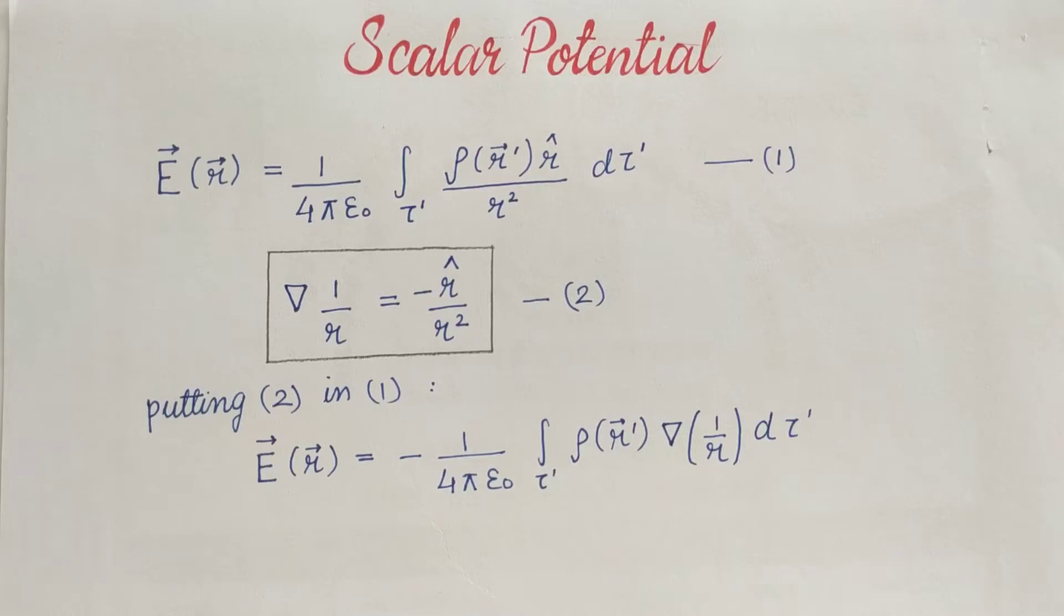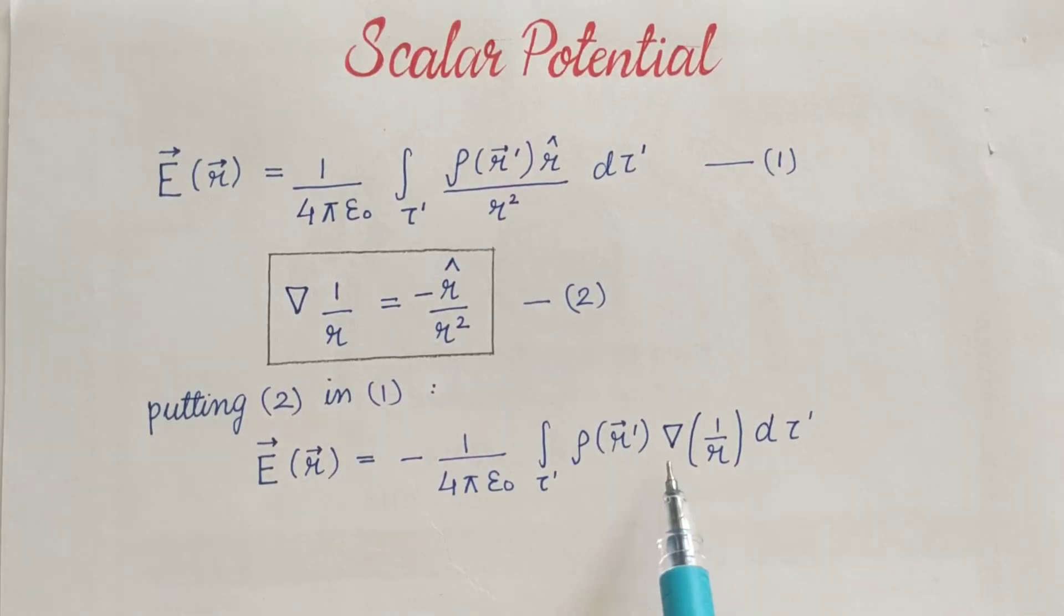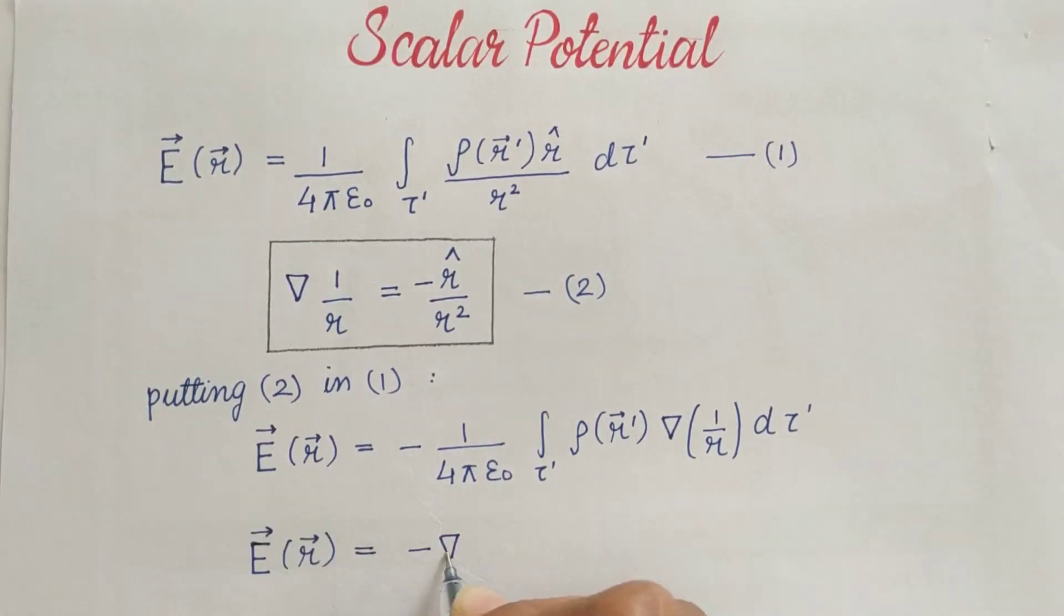Here integration is over prime coordinates x dash y dash z dash, whereas this gradient operator involves unprimed coordinates x y and z. So we can take this gradient operator out of this integration sign.